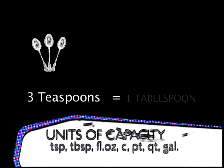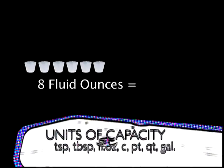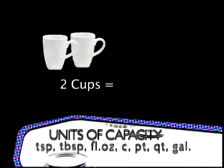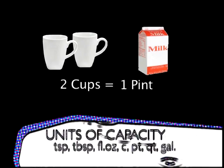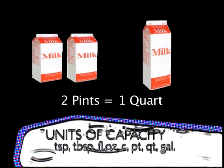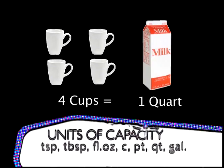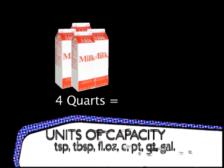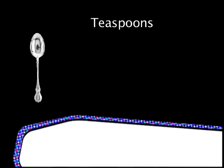Three teaspoons equals one tablespoon. Eight fluid ounces equals one cup. Two cups equals one pint. Two pints equals one quart. Four cups equals one quart. Four quarts equals one gallon.